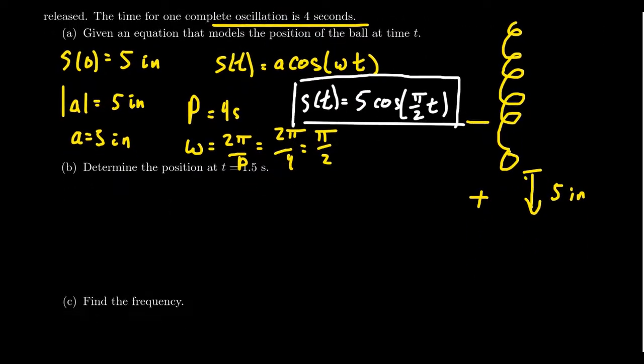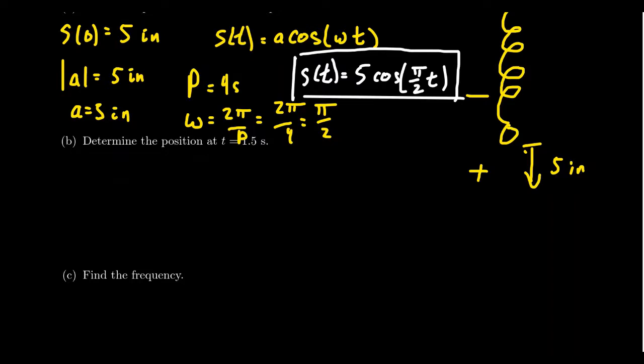Therefore, the model we can use to map out the location of our ball at any moment would be S(t) equals 5 cosine of (π/2)t. So this is the model we can use to answer questions about this harmonic motion. For example, where will the ball be located at the moment 1.5 seconds? So basically, we're asking ourselves, what is S(1.5)? So we're going to compute 5 times cosine of π/2 times 1.5.